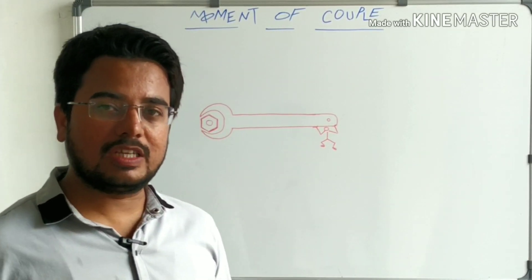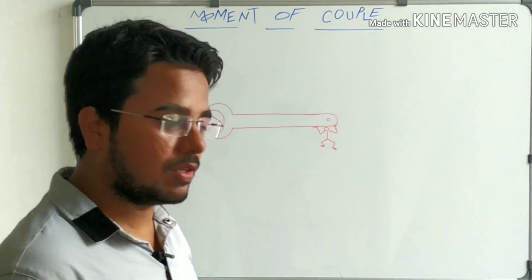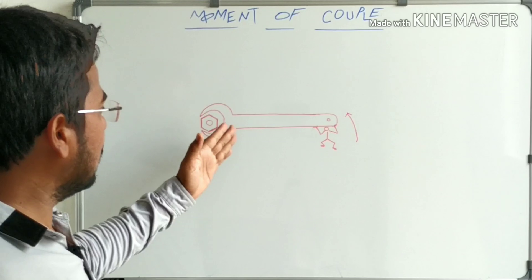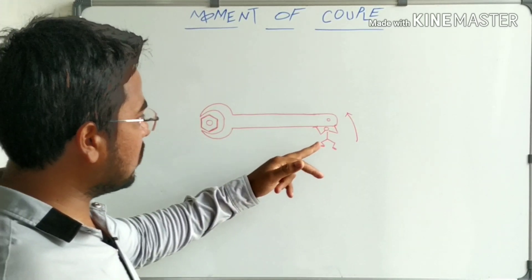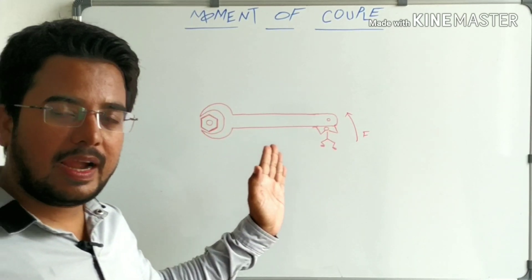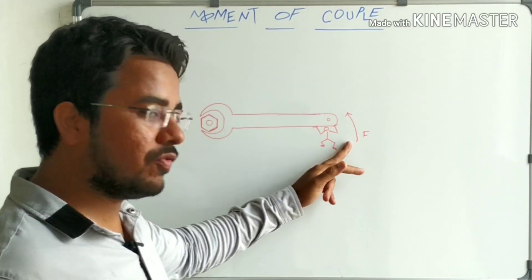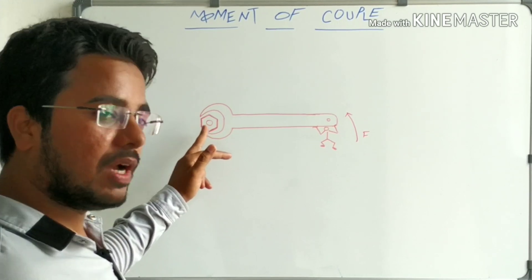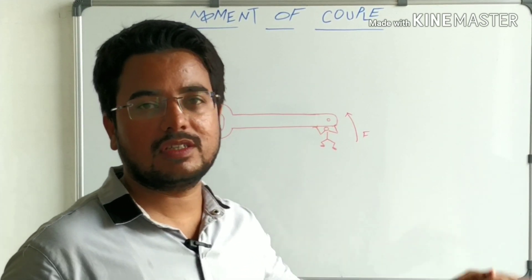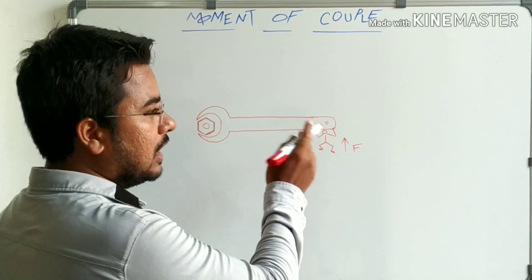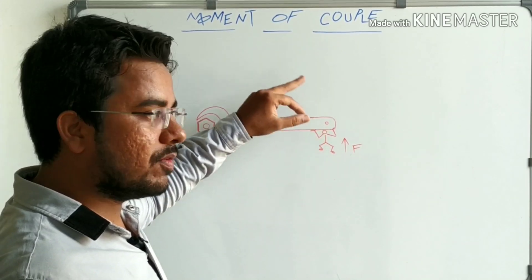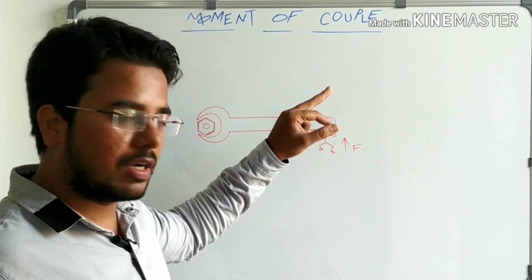In previous class we discussed if a force acts on a body and the body is pivoted at a fixed point, then the effect of force will turn the body. The product of magnitude of force and perpendicular distance from the pivoted point to the line of force is the turning effect. But a single force cannot rotate a body alone. For rotation or turning of a body, a pair of forces are required.